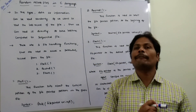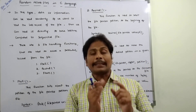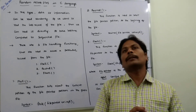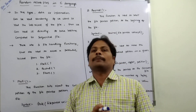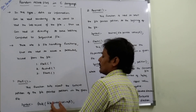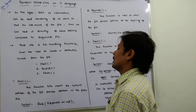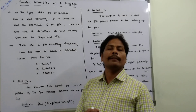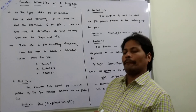The ftell function tells where the file pointer is located — it tells the current position of the file pointer. The syntax of the ftell function is: ftell(file_pointer). The file pointer variable points to the current position of the file. The ftell function tells about the current position of the file pointer in the given file. The syntax is: ftell(file_pointer);